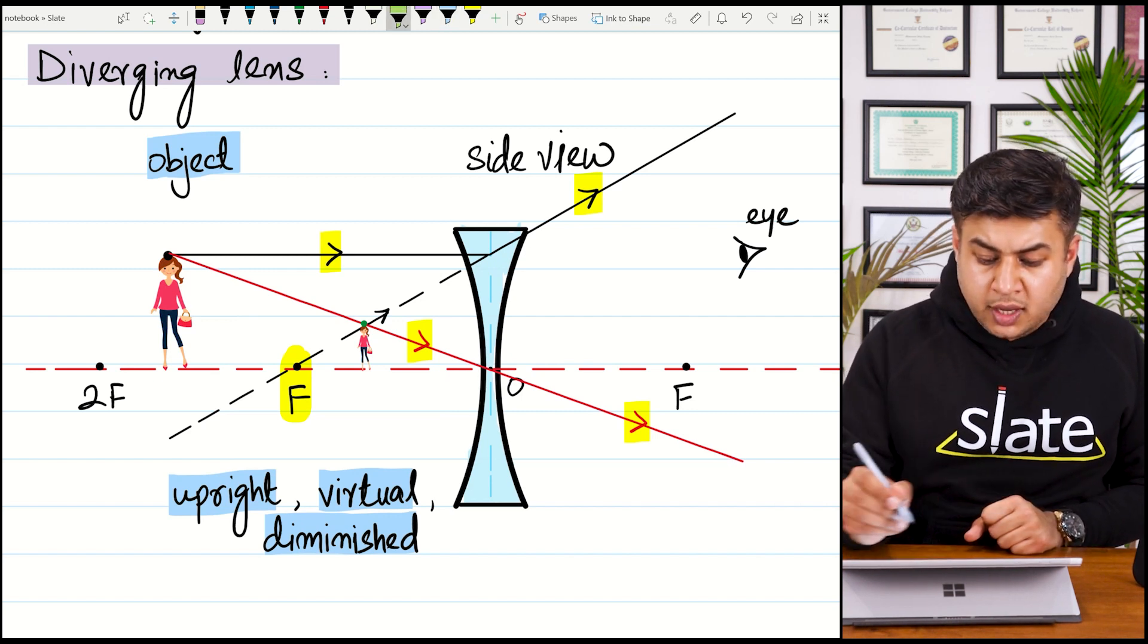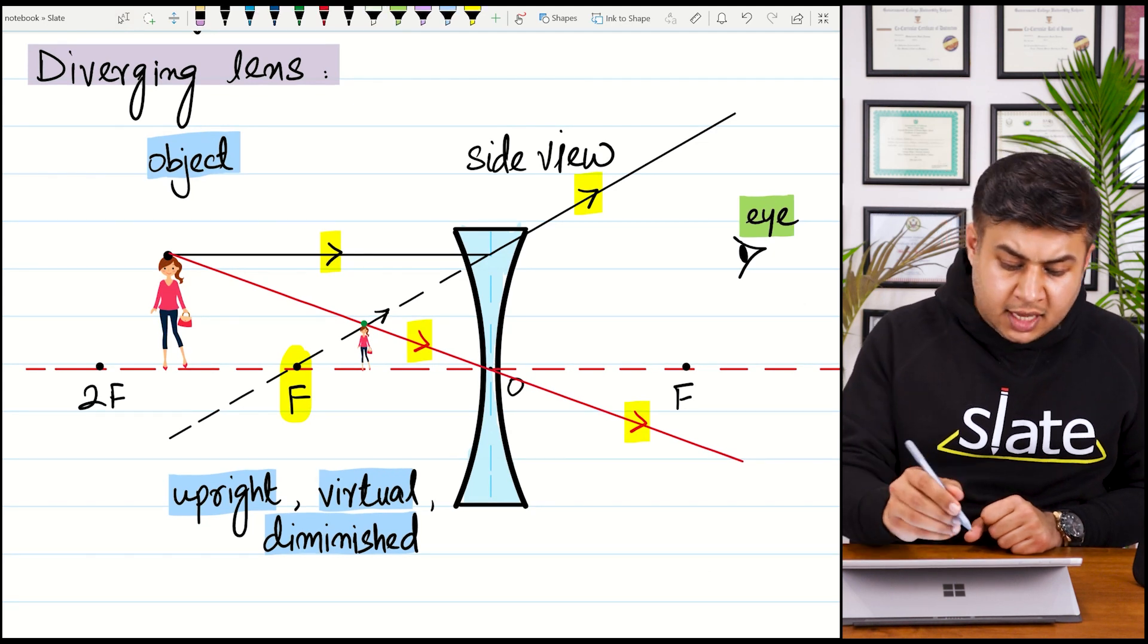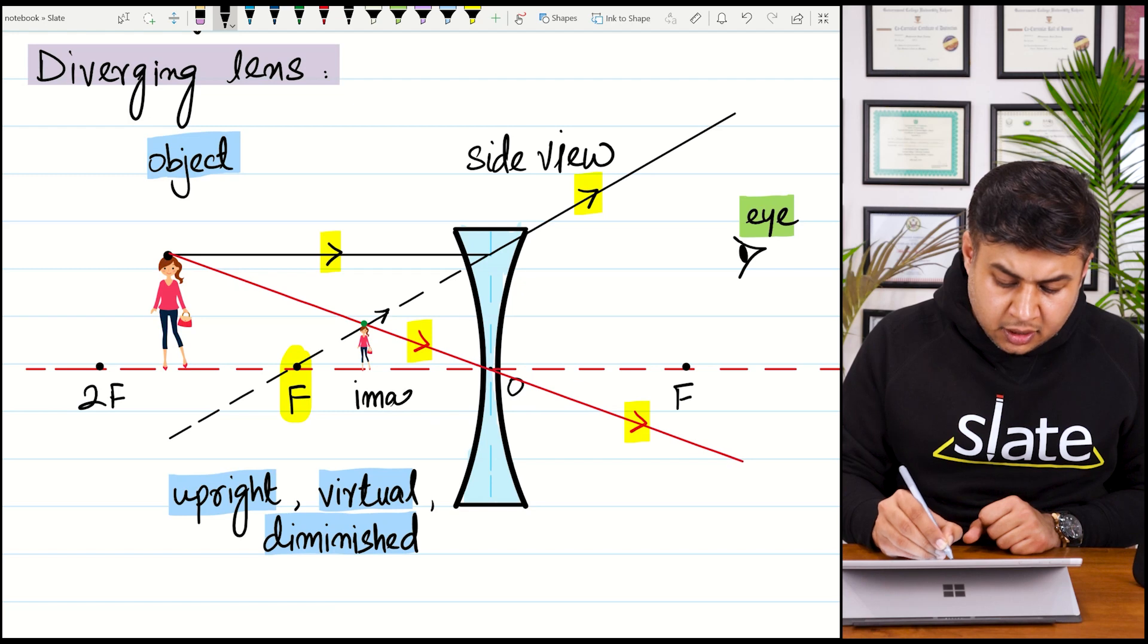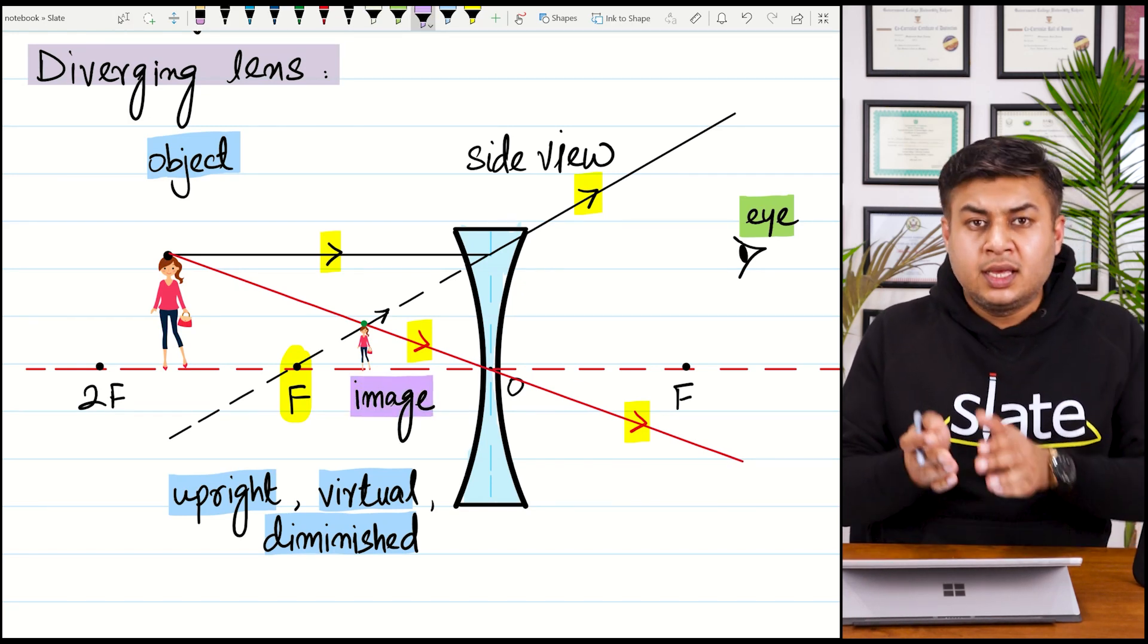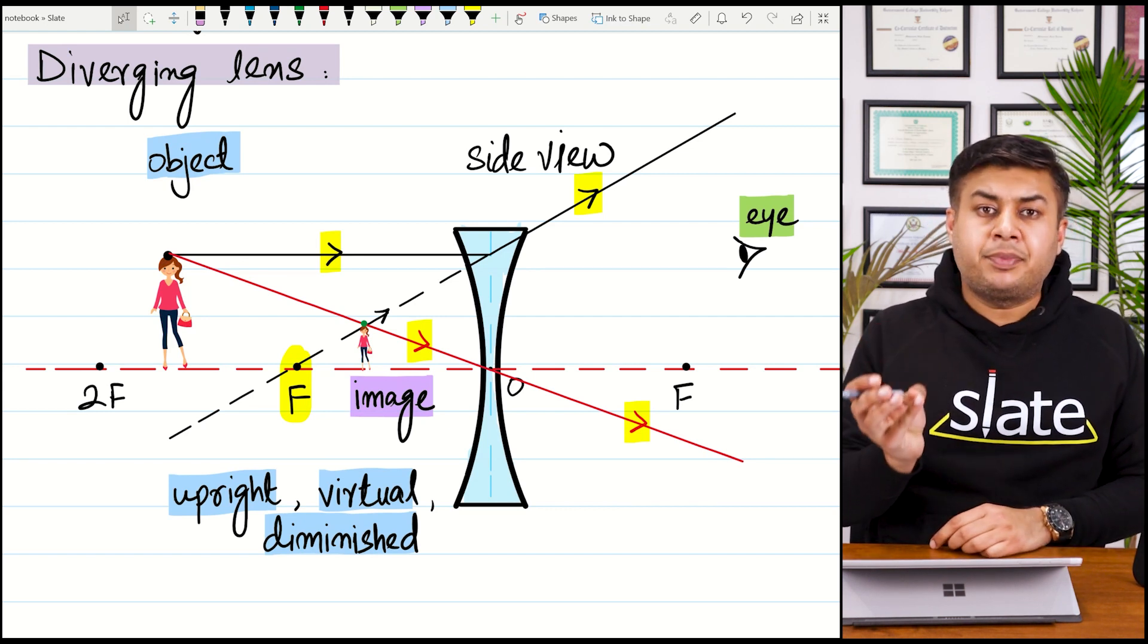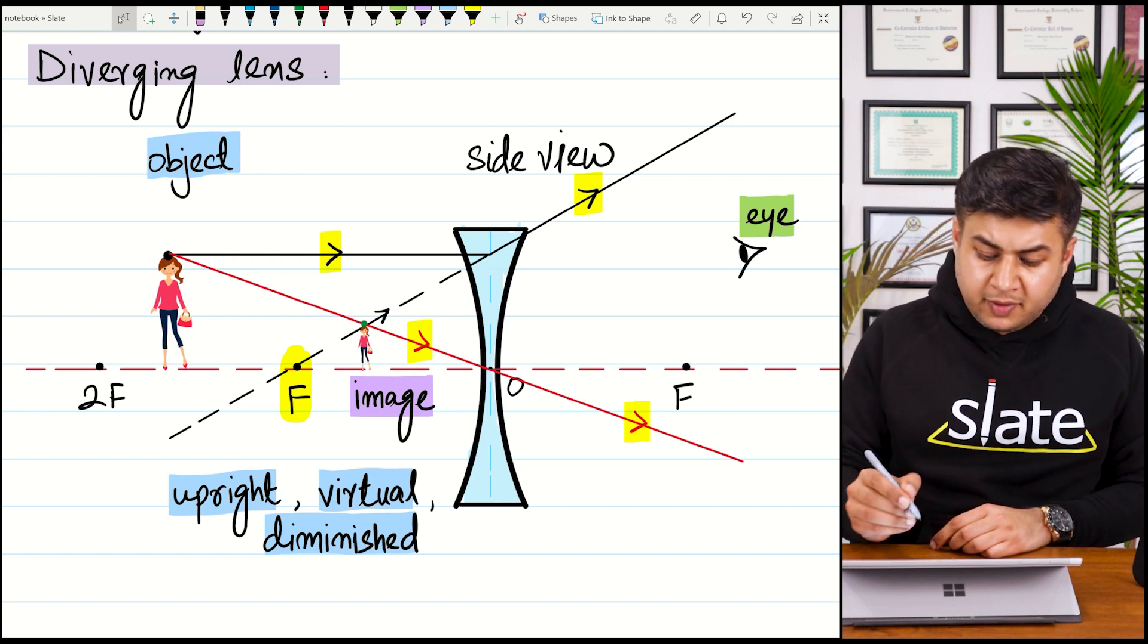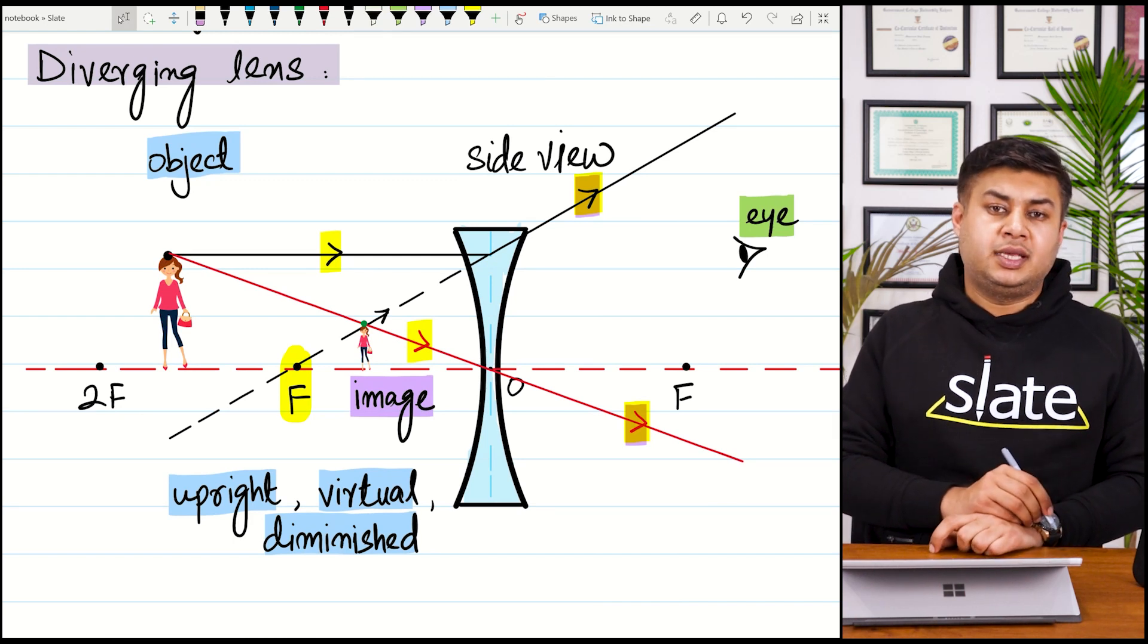So the person who is viewing the object from the other side of the lens is going to locate the image at the same side. The object is on the left side of the lens, and the image is also on the left side of the lens. It is upright, it is virtual, it cannot be caught on screen because the rays of light are diverging, and it is a diminished image.